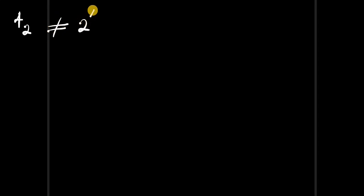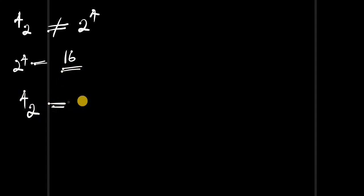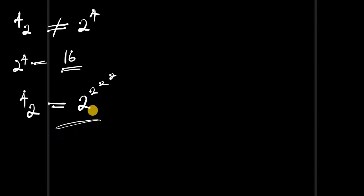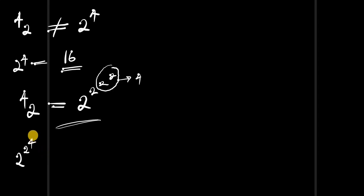We were comparing ⁴2 and 2 to the power of 4, and we said these are not equal. We discovered that 2 to the power of 4 is equal to 16. So what would be the value of ⁴2, which equals 2 power 2 power 2 power 2? To evaluate this, you start with the top first: 2 power 2 is 4, so you get 2 power 2 power 4. Then 2 power 4 is 16, giving you 2 power 16.